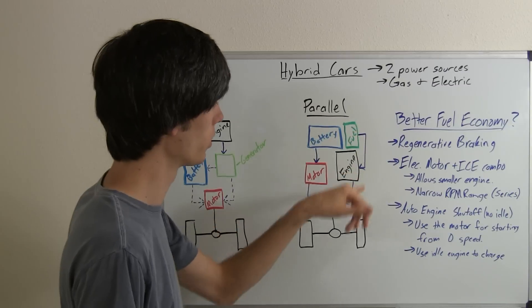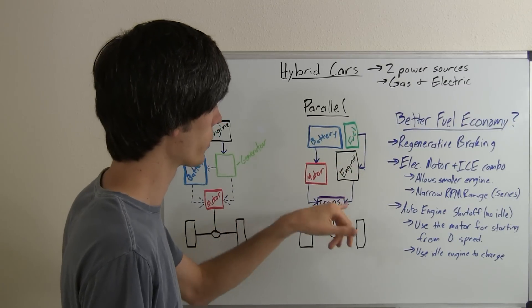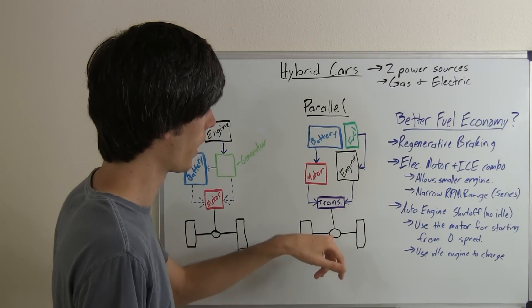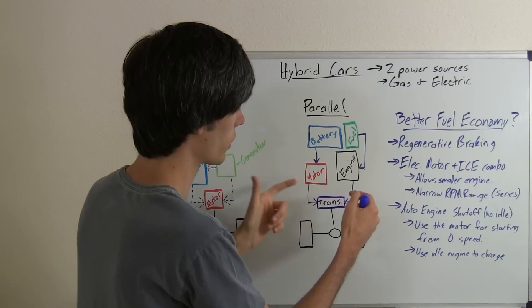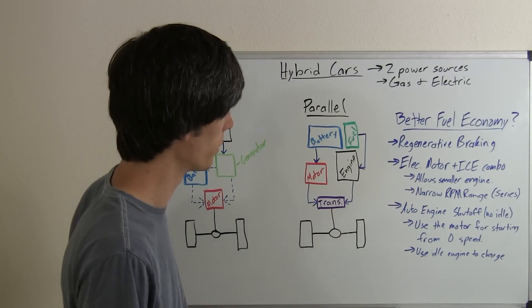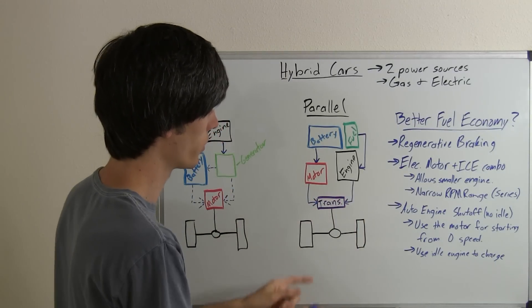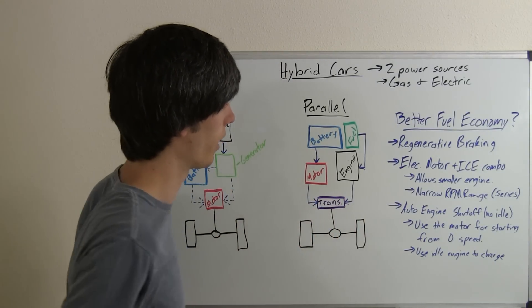On the other side, you've got fuel which powers your engine. Your engine also powers this transmission, and then that transmission sends the power to the wheels. So the motor and the engine are actually linked via the transmission. They both send power to it, and then the power goes out to the wheels.